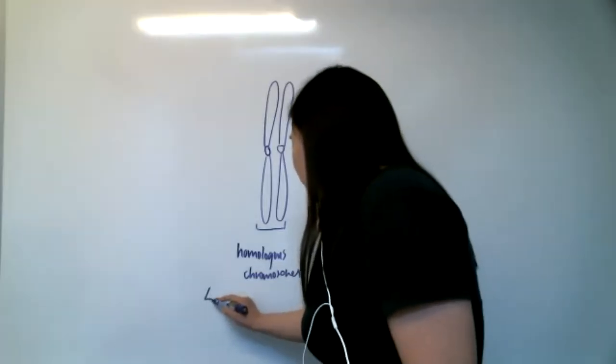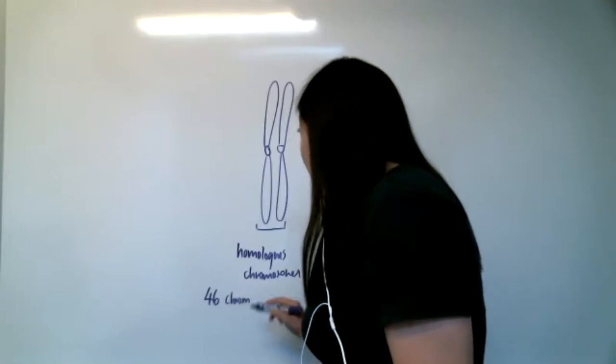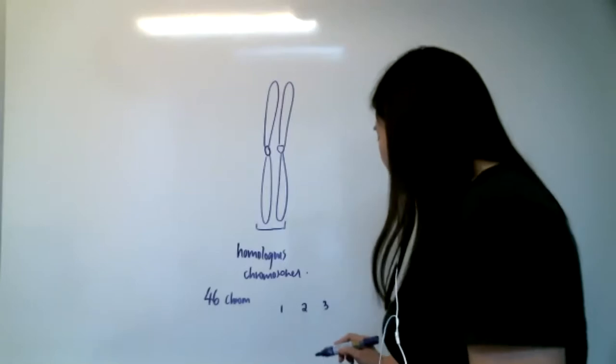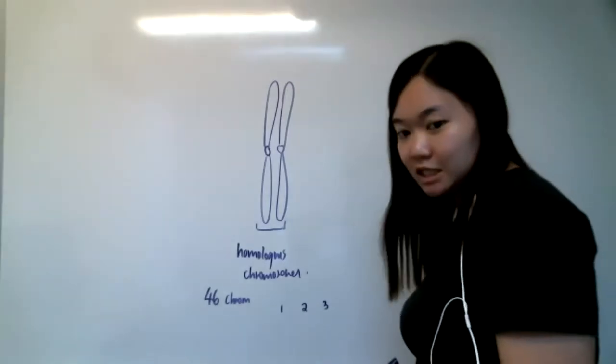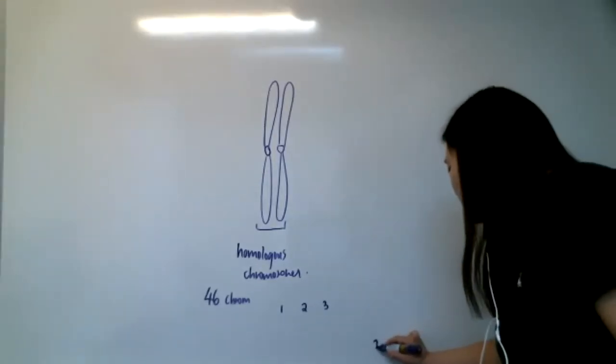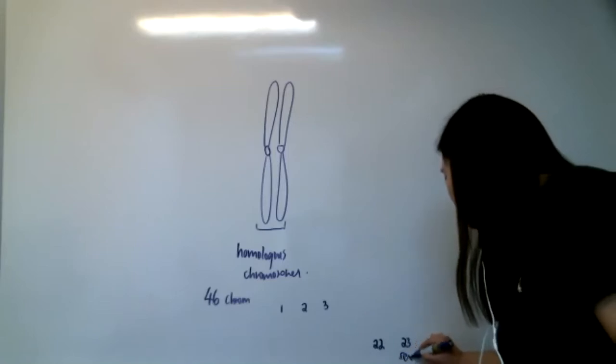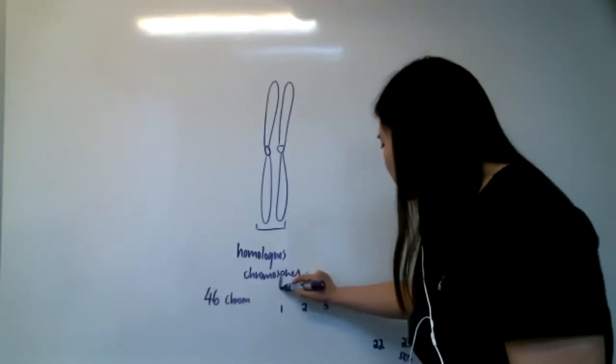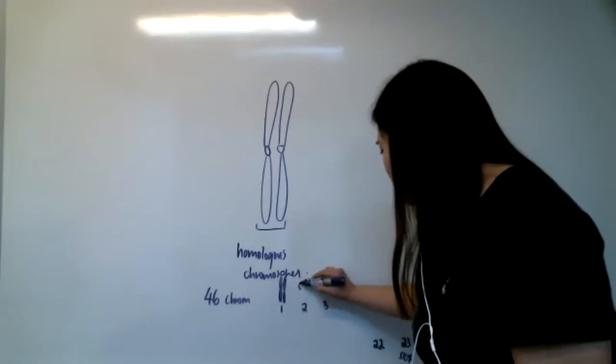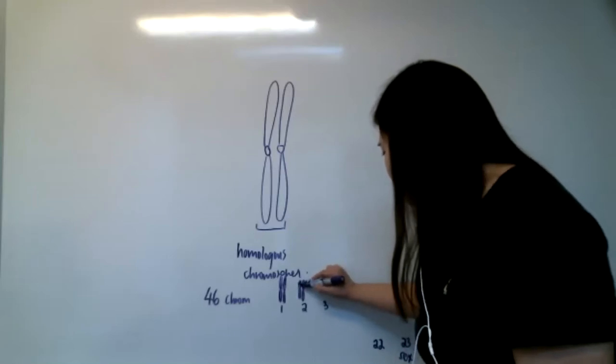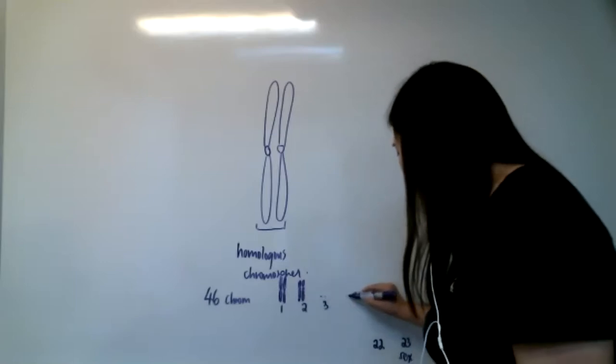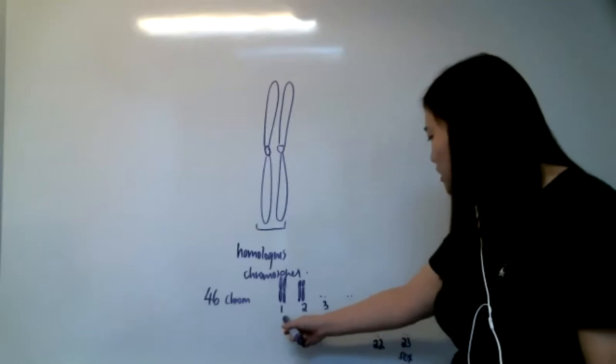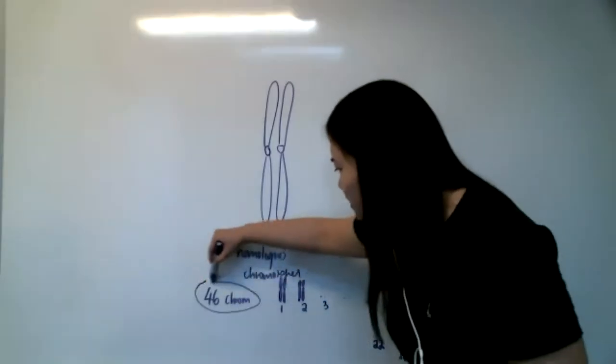If you recall, humans have 46 chromosomes. When you name chromosomes, you use numbers - 1, 2, 3. But the funny thing is, we don't have chromosome 46. We only have up to chromosome 22, and the last one, chromosome 23, is the sex chromosome. Why is that? Because those chromosomes come in pairs. You have two chromosome 1s, two chromosome 2s, two chromosome 3s, and so on. So 46 chromosomes is actually 23 pairs.